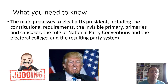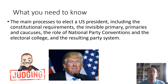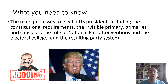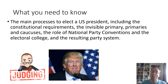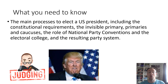Looking at the A-level specification for A-level politics, it tells us what you need to know. You need to know the main process to elect a US president, including the constitutional requirements, the invisible primary, primaries and caucuses, the role of the national party conventions, and the electoral college and the resulting party system. We're going to look at almost all of that — we'll save the party system for a later video.